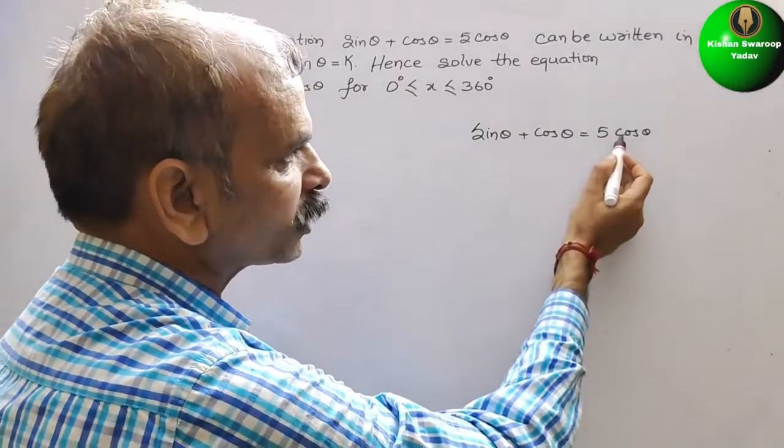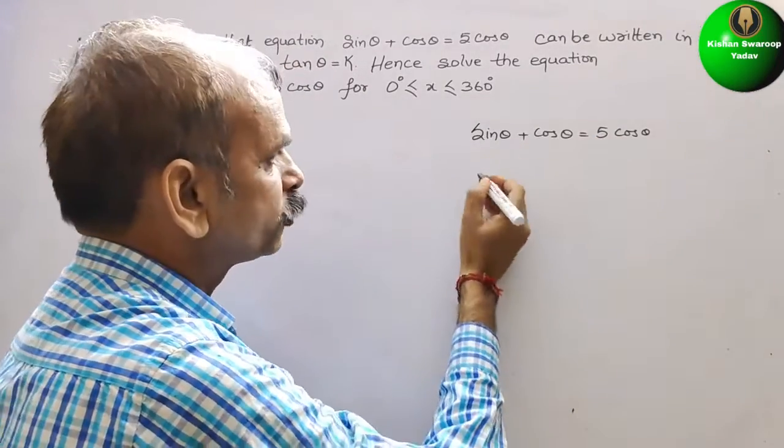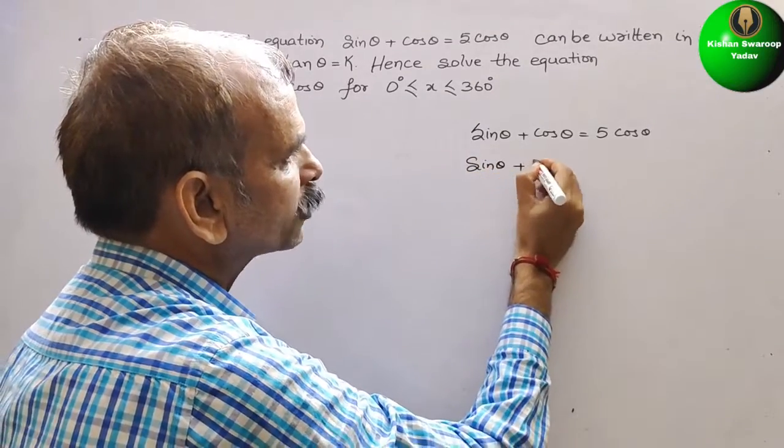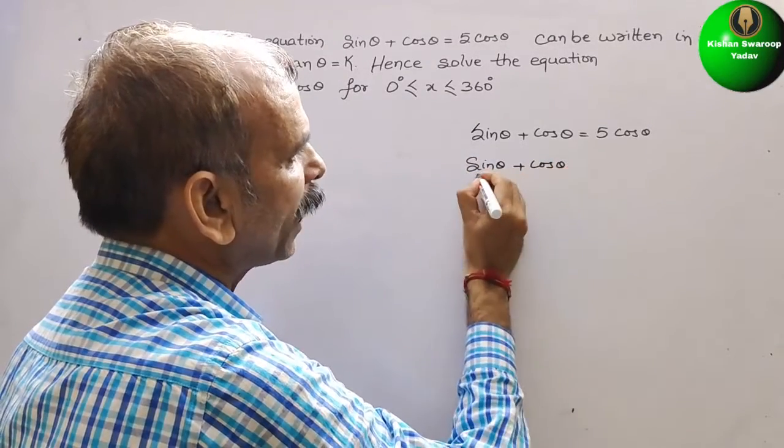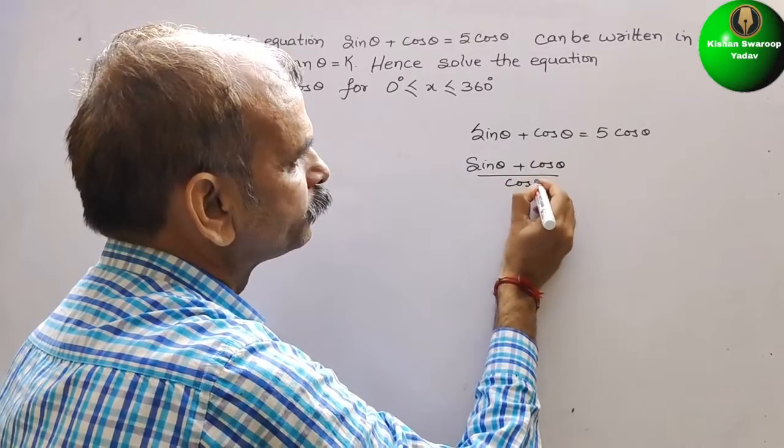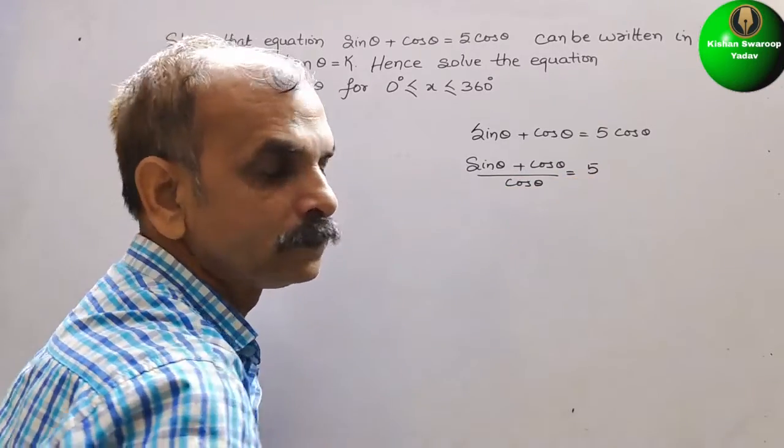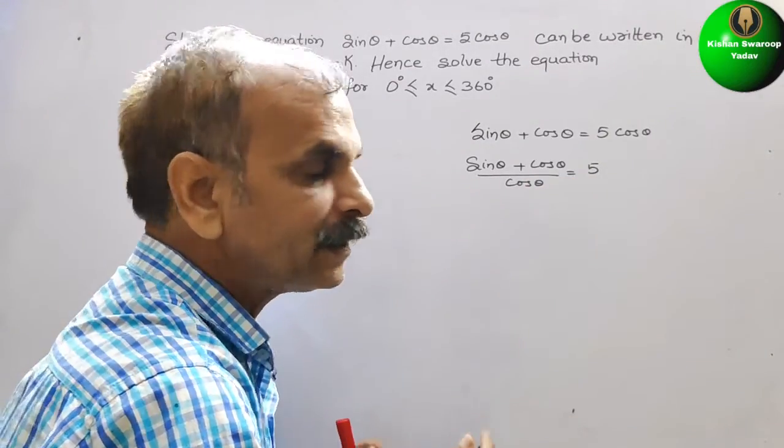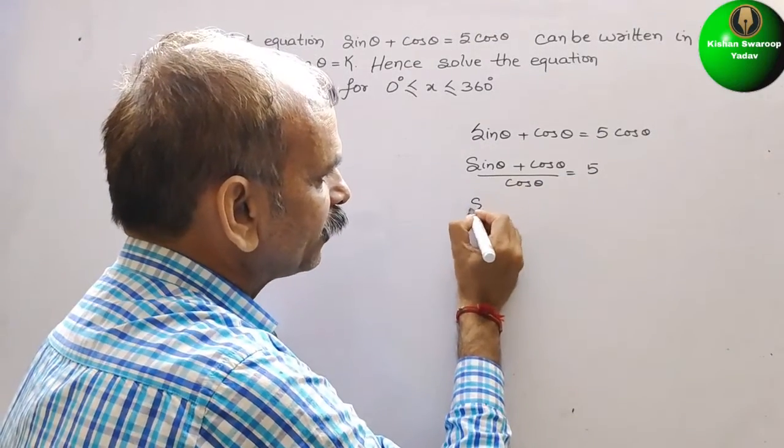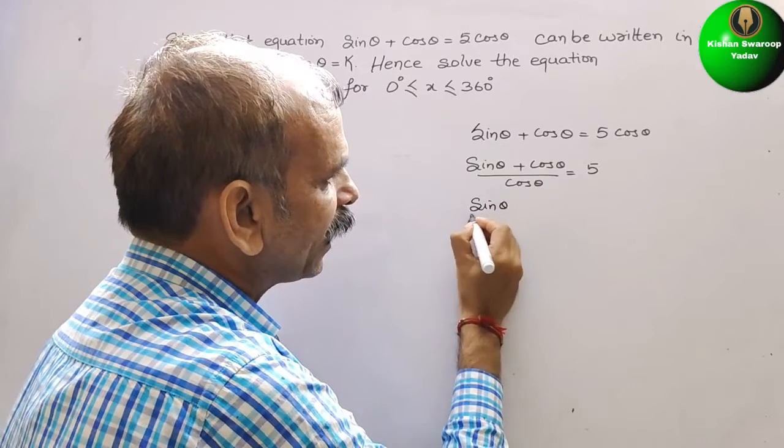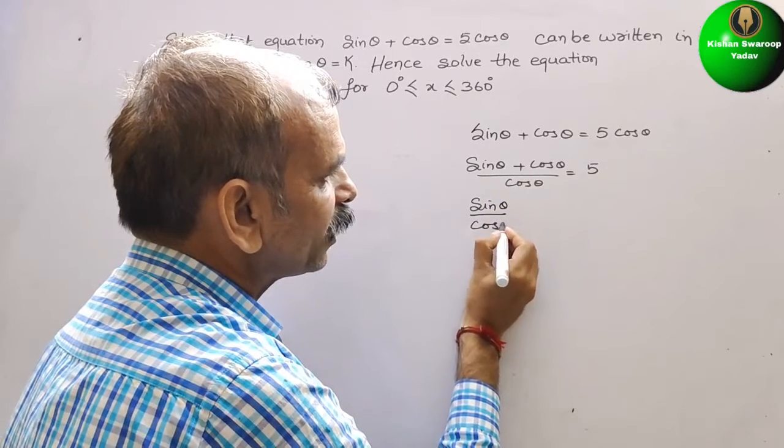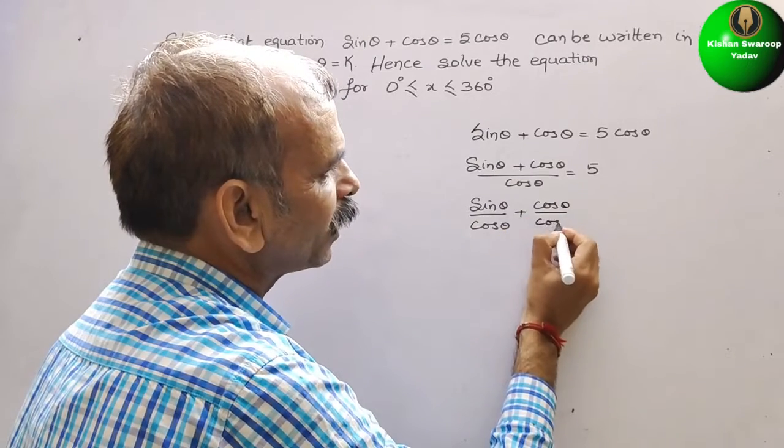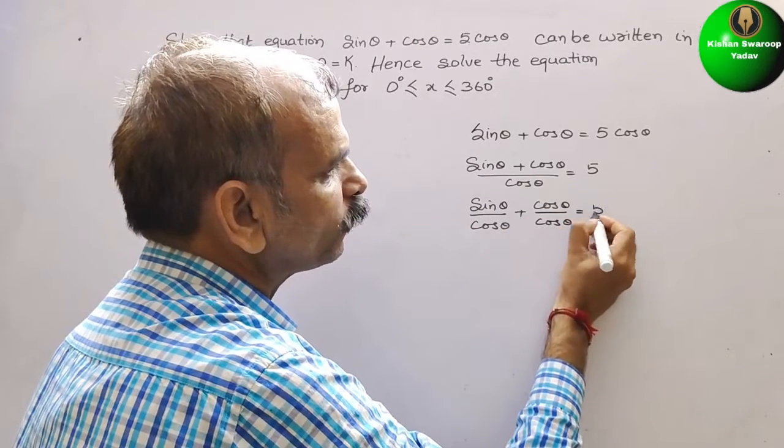Now, bring this cos theta downwards. So, it will be sin theta plus cos theta divided by cos theta equals 5. Now, split this. It means that sin theta by cos theta plus cos theta by cos theta equals 5.